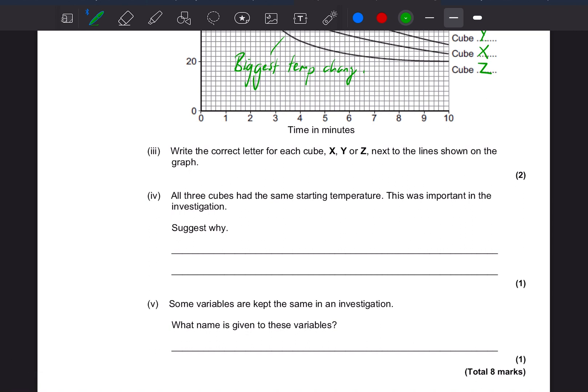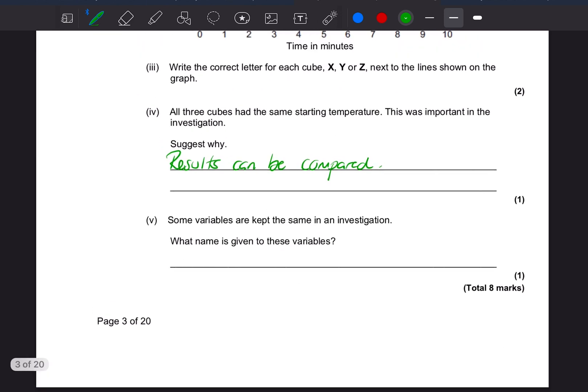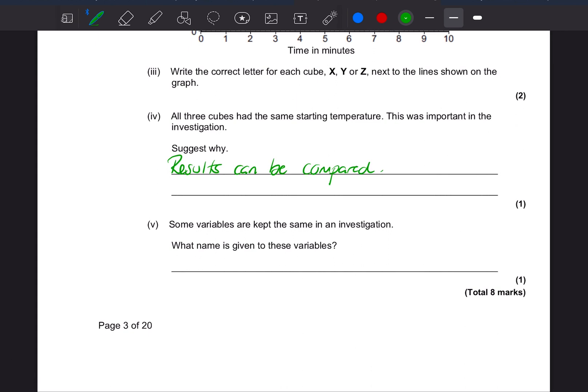All three cubes had the same starting temperature, this was important in the investigation. Suggest why. That's what I mentioned earlier about control variables. The whole point of having everything the same is that it means you can compare your results, so the results can be compared. Some variables are kept the same in an investigation. What name is given to these? These are the control variables.